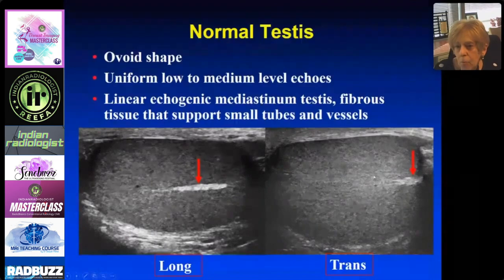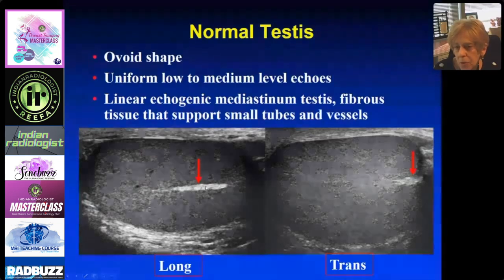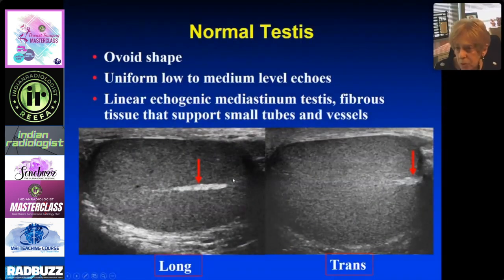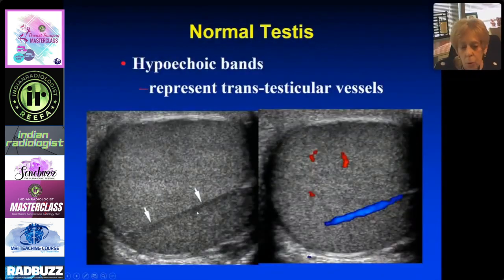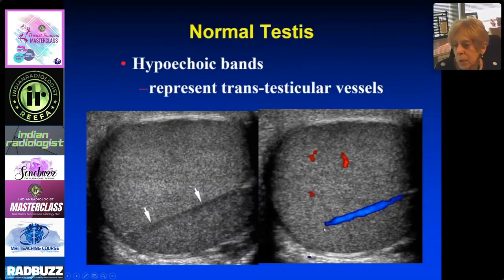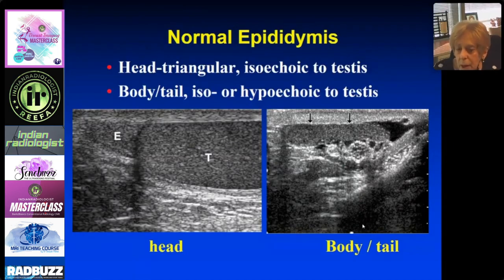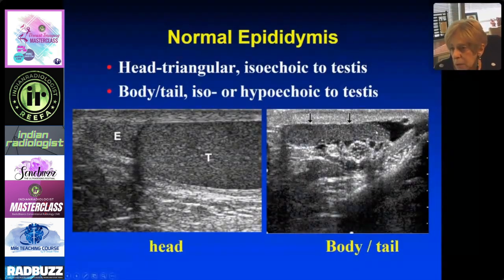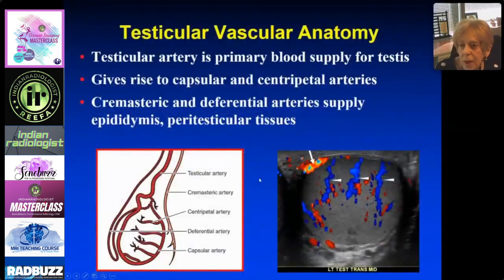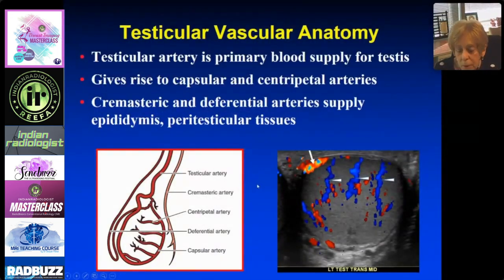The normal testis is pretty straightforward: ovoid shape, uniform low-to-mid-level echoes, and a linear echogenic mediastinum which contains fibrous tissue supporting the tubes and vessels that cross the testis. Occasionally you'll see a hypoechoic band — that's not abnormal, not a fracture. Put color on it because sometimes you can see the trans-testicular vessels on grayscale. Also look for the epididymis: the head is easy, just on top of the testis, isoechoic to the testis, and you can scan around to see the body and tail.